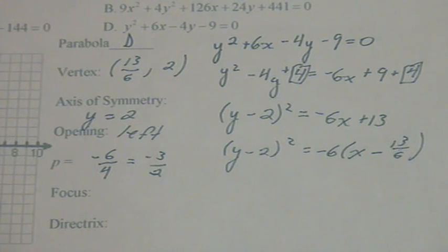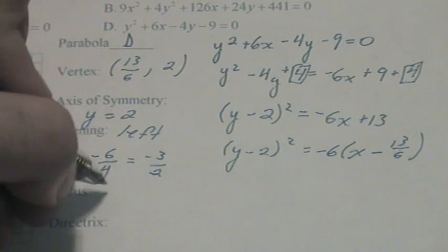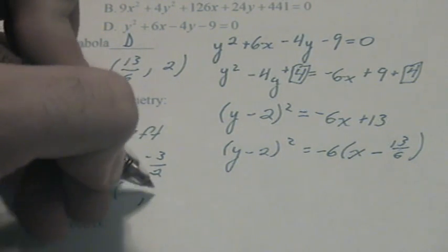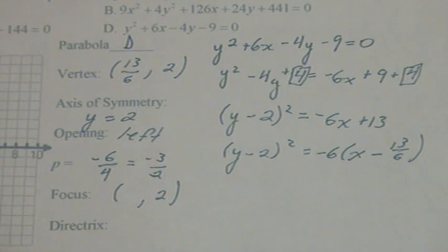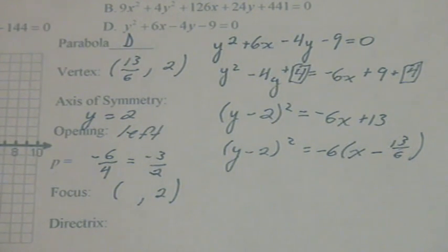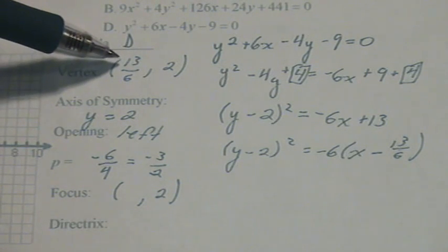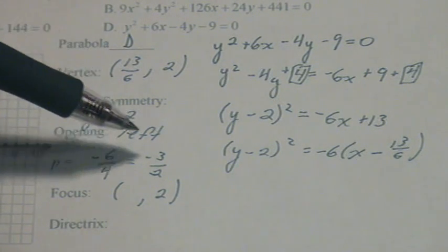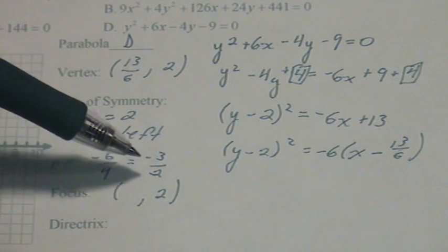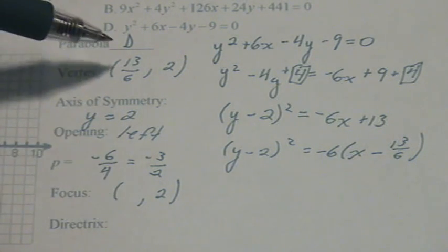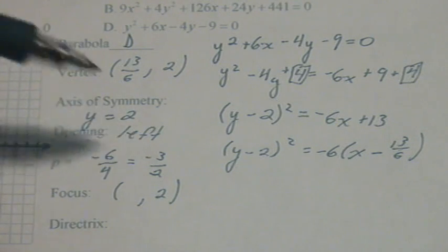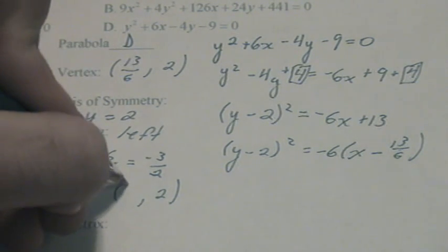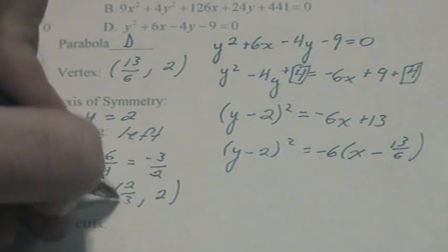Now we move on to the focus. According to the axis of symmetry, y equals 2, and we're going to keep that. y of the focus will be 2. We'll take the x coordinate of the vertex and add p to find the x coordinate here. 13 over 6 plus negative 3 halves is positive 2 thirds.